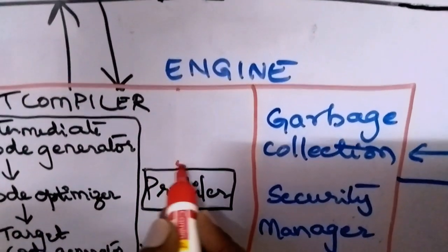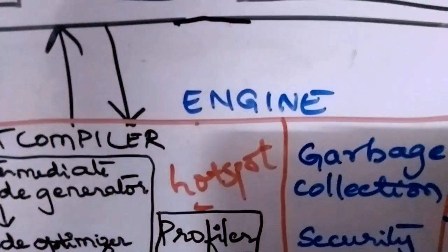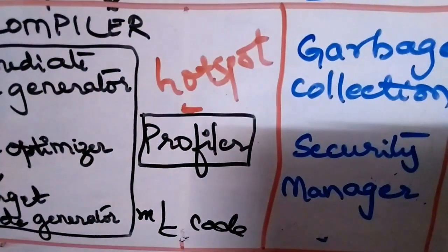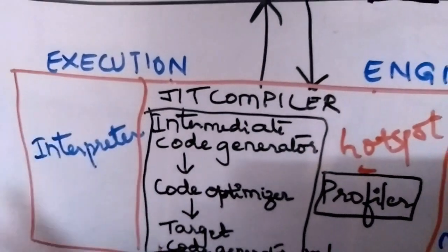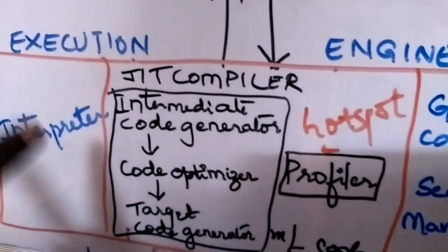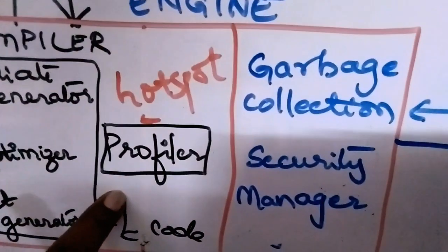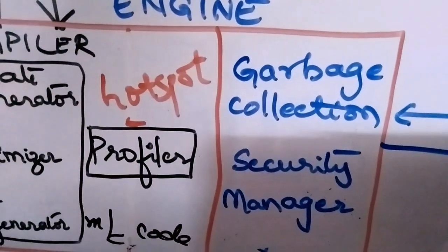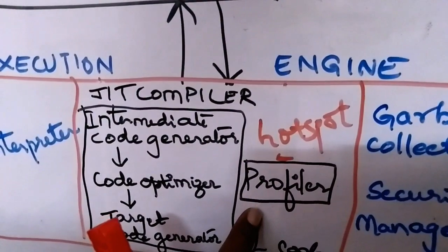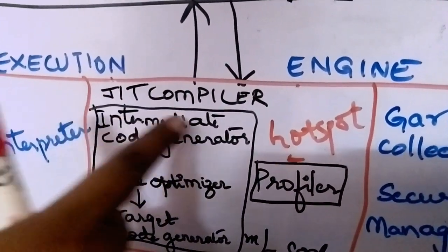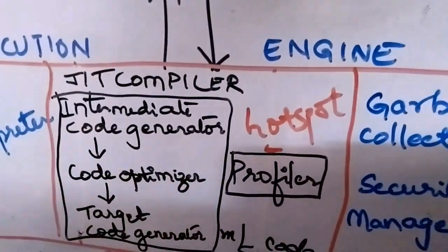The profiler is also called hotspot, because it identifies hotspots in the code — methods that the JVM spends more time on because they are called many times. The interpreter repeatedly executing these methods makes the JVM slow. The profiler identifies these hotspot methods and passes them to the JIT compiler, which generates machine code for them to improve performance.